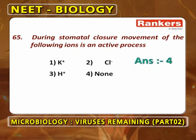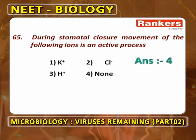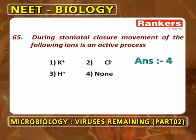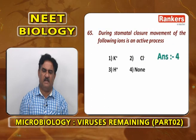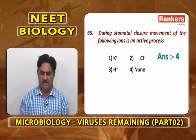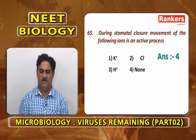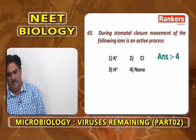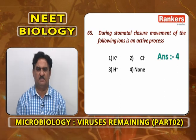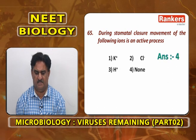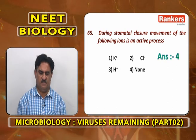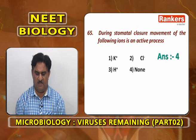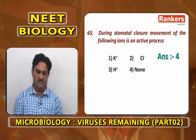During stomatal closure movement, the following ion movement is an active process: K⁺ ions out of guard cells, Cl⁻ ions out of guard cells, protons entering the guard cells — none of these are active methods. All are passive methods during closure. Entry of protons, removal of K⁺, and Cl⁻ all come under passive methods.